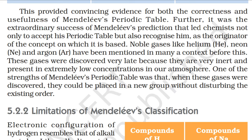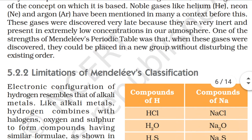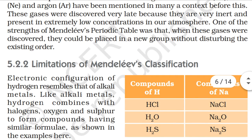Noble gases like helium, neon and argon were discovered very late because they are very inert and present in extremely low concentrations in the atmosphere. One of the strengths of Mendeleev's periodic table was that when these gases were discovered, they could be placed in a new group without disturbing the existing order.